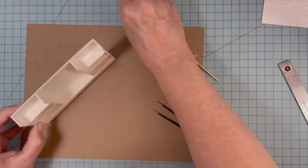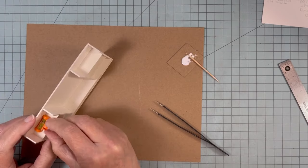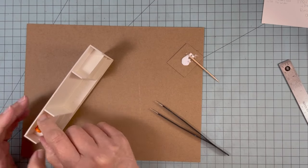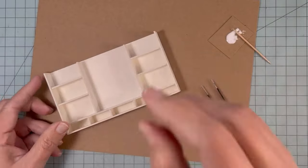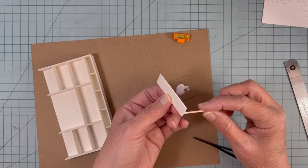My husband gave me this little level that he got from assembling something that we bought from Ikea. It's a cute little level. Here I'm gluing in the longer shelves.